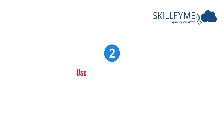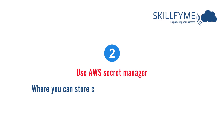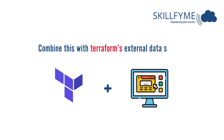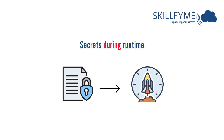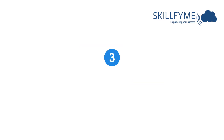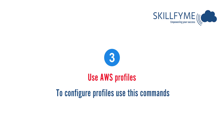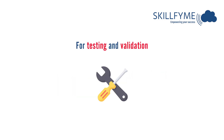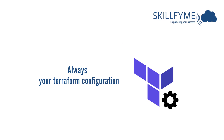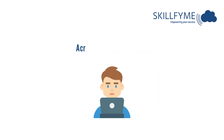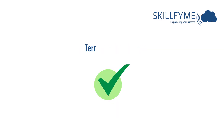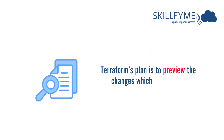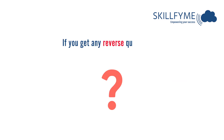For secure credentials you have three options: use environment variables to set AWS credentials, use AWS Secrets Manager to store credentials and retrieve them dynamically via Terraform's external data sources, or use AWS profiles configured at ~/.aws/credentials. For testing and validation, always run terraform validate to check configuration syntax and terraform plan to preview changes across multiple accounts.